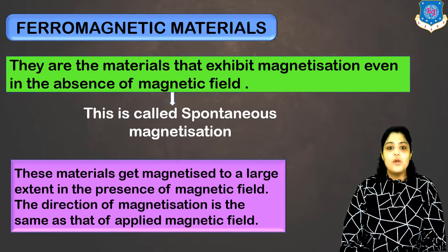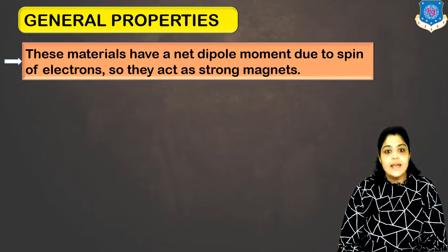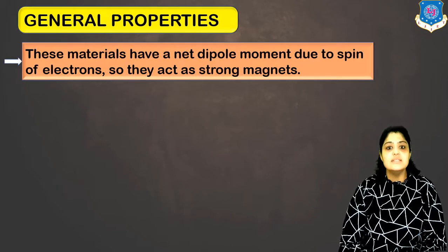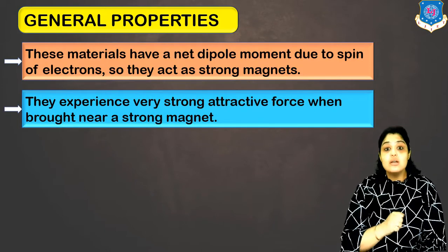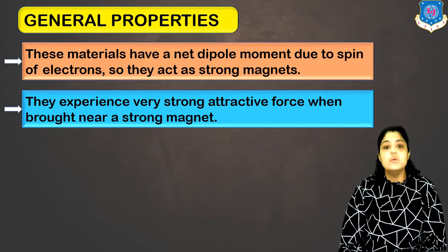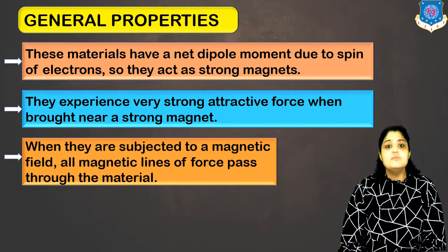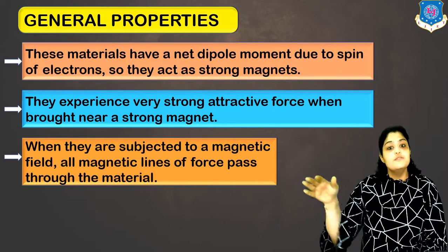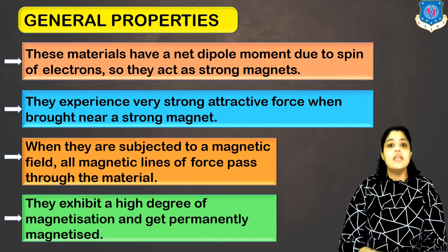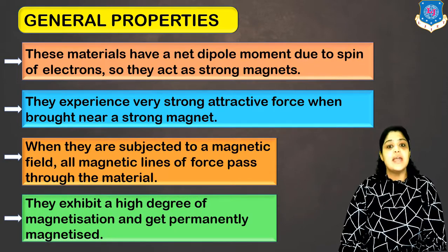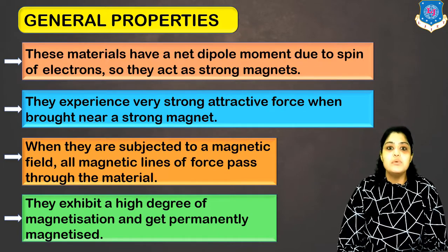Looking at general properties of ferromagnetic materials: they have a net dipole moment due to spin of electrons and act as very strong magnets. They experience a very strong attractive force when brought towards a bar magnet or strong magnet. When subjected to a magnetic field, all the magnetic lines of force pass through the material. They exhibit a high degree of magnetization and can get permanently magnetized due to the parallel dipoles they contain.